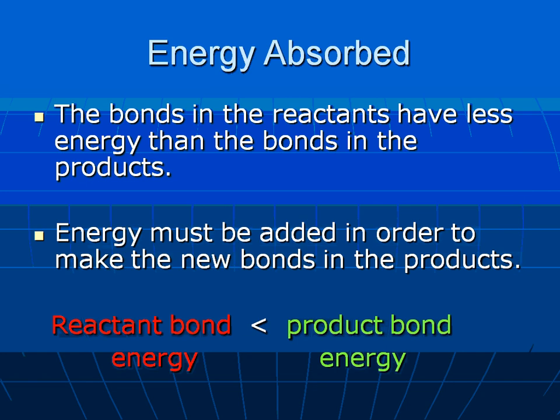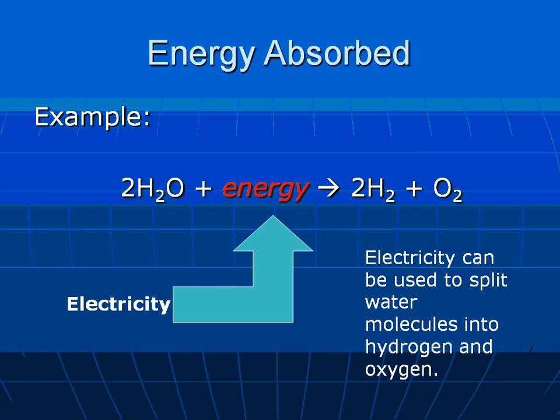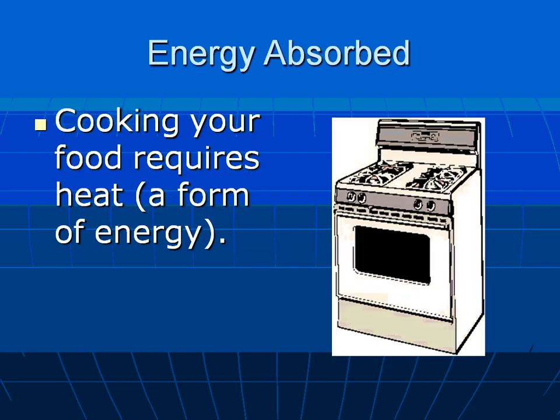If the bonds in the product have more energy in them than the bonds that were released in the reactants, then the energy is absorbed in that chemical reaction. For example, in order to break apart water into hydrogen and oxygen, you need a lot more energy to break the bonds in the water than you need to make the new bonds in the products. That energy can be electricity. When we cook our food, this requires a lot of energy on the reactant side — that's why we use stoves, microwaves, and fire — because we need a lot more energy on the reactant side than we get out of the product side. Overall, the energy is absorbed.